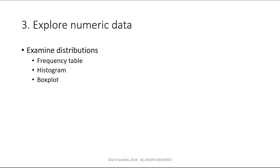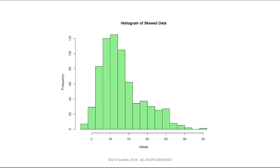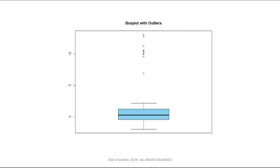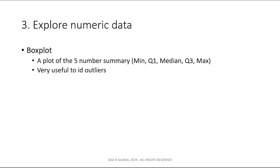For numeric data, you can do frequency tables for most things, with a couple of exceptions. You can use binning for quantitative data, and histograms to look at distributions — everyone covers this in Stats 1. Box plots give you the five-number summary and are great for identifying outliers and looking at the distribution of data. Summary metrics — measures of center and measures of spread — are always somewhat redundant with looking at distributions, but still useful.